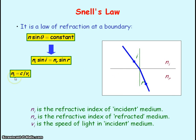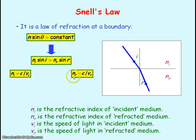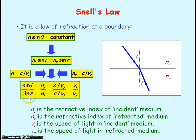The refractive index of medium one equals the speed of light in free space divided by the speed of light in medium one, and the refractive index of medium two equals c divided by v_R. Substituting n_i and n_r into the equation gives: sin(i) / sin(r) = (c/v_R) / (c/v_I). The c's cancel, leaving 1/v_R divided by 1/v_I, which simplifies to v_I / v_R.